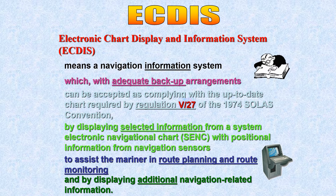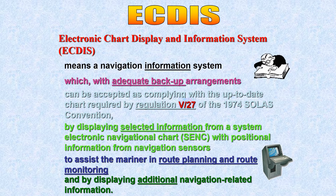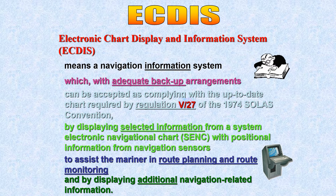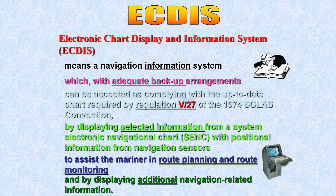ECDIS is a navigation information system, meaning it needs to adhere to IMO, IHO, and IEC requirements. IMO is the International Maritime Organization, IHO is the International Hydrographic Organization, and IEC is the International Electrotechnical Commission.